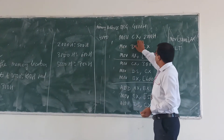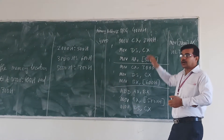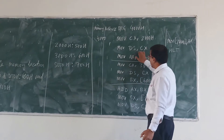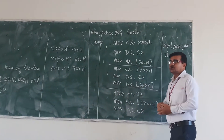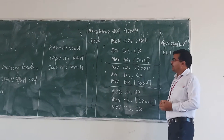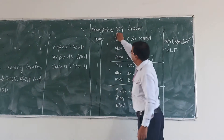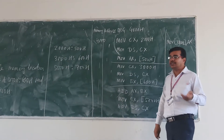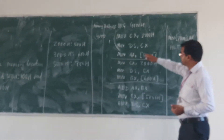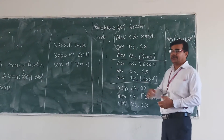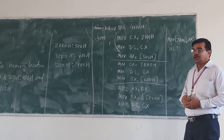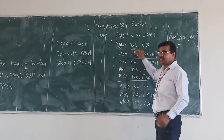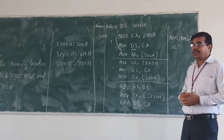MOV CX, 2000h. MOV DS, CX. From these two steps, we are initializing the data segment register DS.